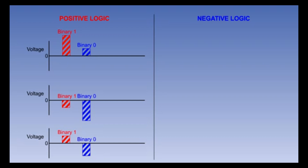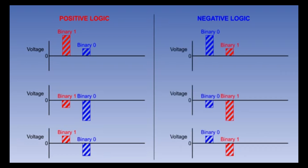Most digital computer systems employ positive logic. The negative logic concept defines binary one as the lower voltage value and binary zero as the higher or more positive voltage value. Although less popular, negative logic is used in some systems in order to meet certain design parameters.